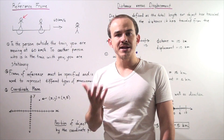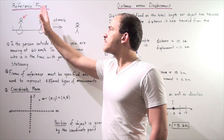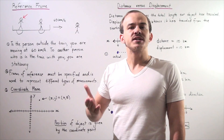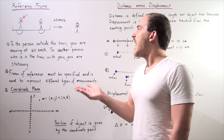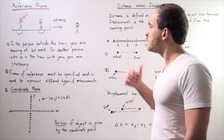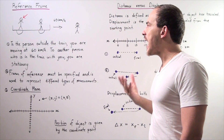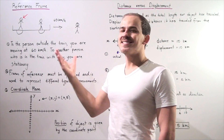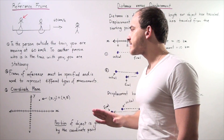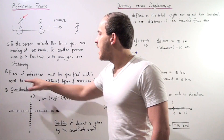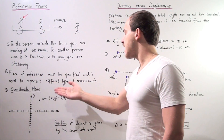So there's a conflict in information, and it's very important to always specify what reference frame we're using whenever we're specifying some type of information such as speed. For example, if my reference frame is of the person outside, I can say the train is moving at 60 kilometers an hour going this way. Frame of reference must be specified and is used to represent different types of measurements.